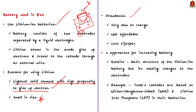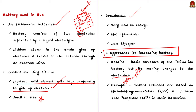This news article provides three approaches. The first approach is to retain the basic structure of the lithium-ion battery but make changes to the electrodes. The ideal electrode should be lightweight, store a lot of lithium, and provide a sufficient pathway for lithium to easily enter and exit. For example, Tesla's cathodes are based on nickel, manganese, cobalt (NMC) and lithium iron phosphate (LFP) in their batteries. NMC batteries have high energy density and provide longer range, while LFP batteries have longer life, better stability, are less toxic, and have faster charging time.